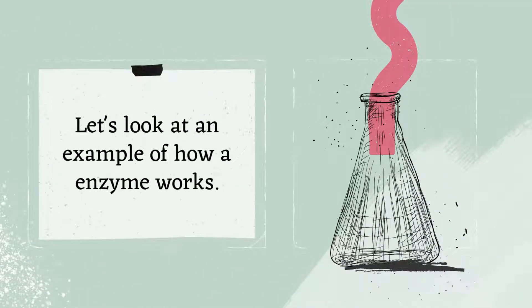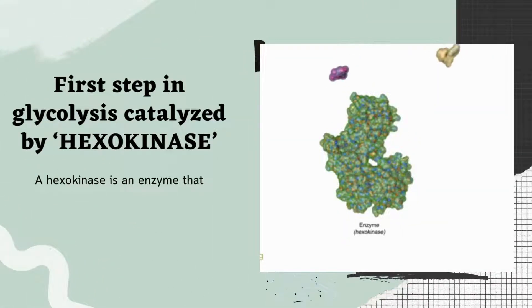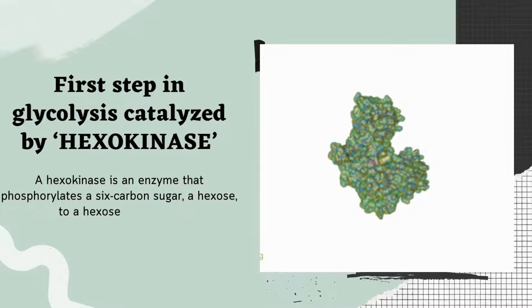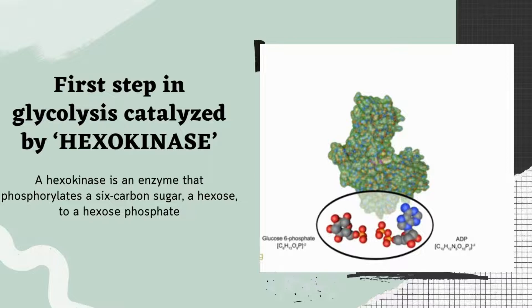Let's look at an example of how enzyme works. First step in glycolysis catalyzed by hexokinase. Hexokinase is an enzyme that irreversibly phosphorylates hexose, forming glucose-6-phosphate with the help of ATP. In most organisms, glucose is the most important substrate for hexokinase, and glucose-6-phosphate is the most important product.